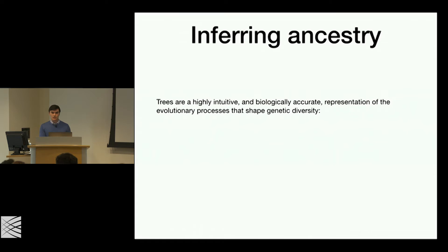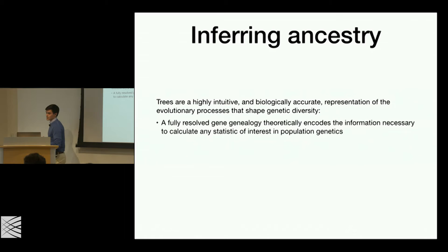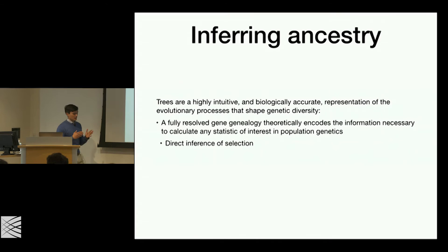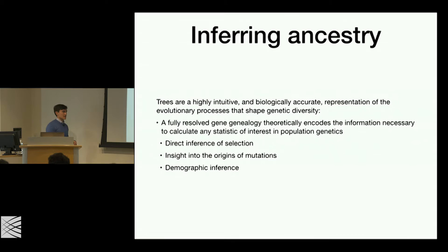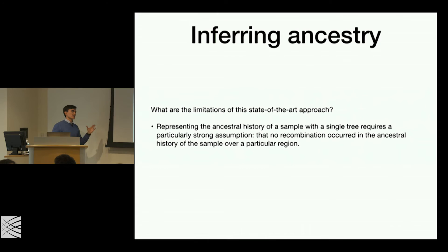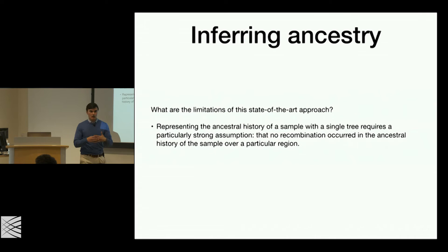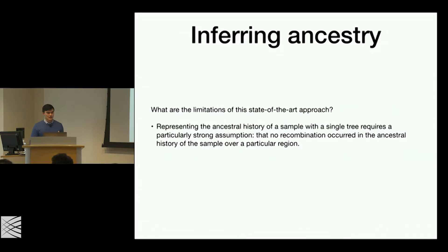Introgression would mean this allele arose in the common ancestor of archaic individuals — the common ancestor of Neanderthals and Denisovans — and was passed to some humans through a little bit of interbreeding. Versus standing variation: it happened in the common ancestor of all humans and archaics. Given that Neanderthals share this version with some Africans, it's more likely this was standing variation in the common ancestor rather than introgression. If we had the fully resolved gene genealogy, you could do direct inference of selection, origins of mutations, and demographic history.